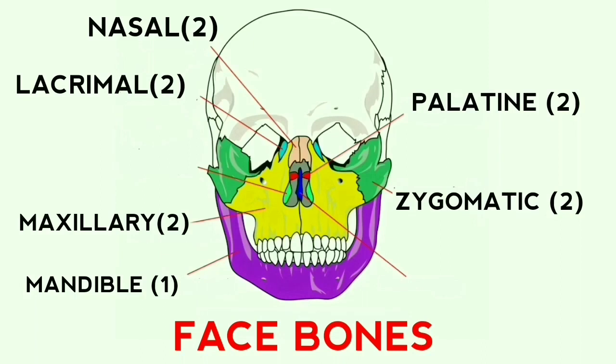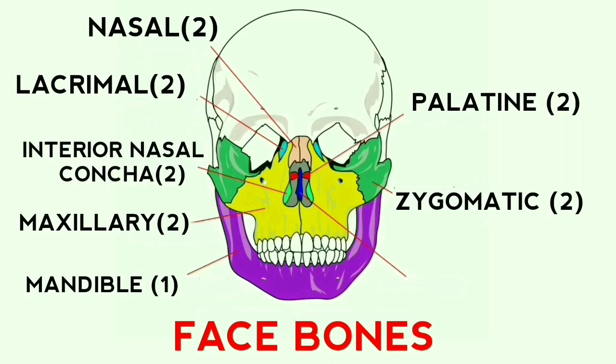The last of the face bones is the inferior concha. These are thin scroll-shaped bones making shell-like structures along the inner surface of the side walls of the nasal cavity.